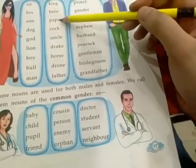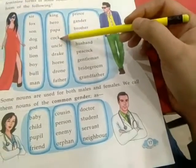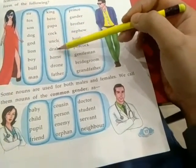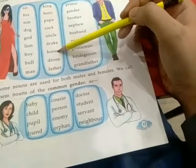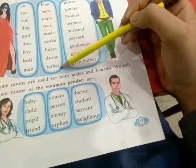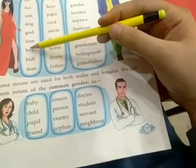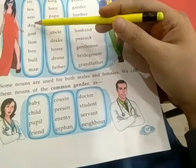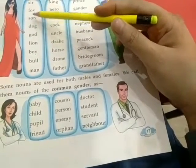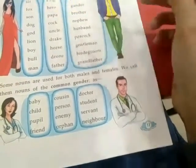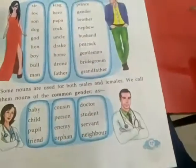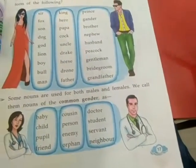More examples of masculine nouns: king, hero, papa, cock, uncle, drag, horse, grown, father, man, bull, boy, lion, god, dog, son, fox, sir. They all are masculine nouns.